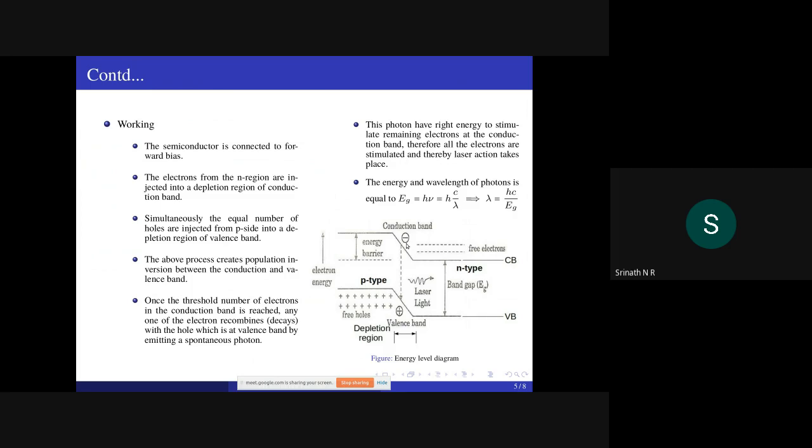Once threshold electron density is reached in the conduction band, any one of the electrons decays spontaneously or recombines with a hole present in the valence band by emitting a photon. This photon triggers remaining electrons present in the conduction band, therefore laser beam is generated.